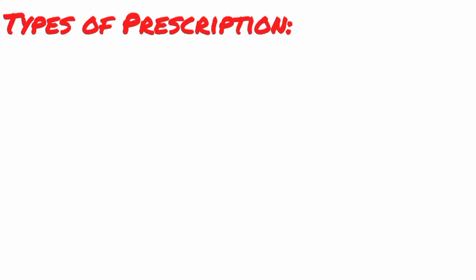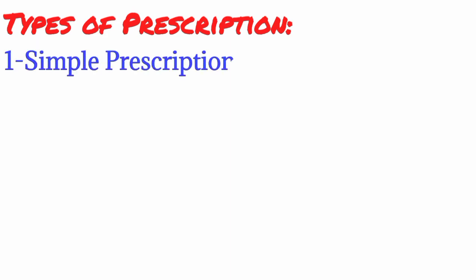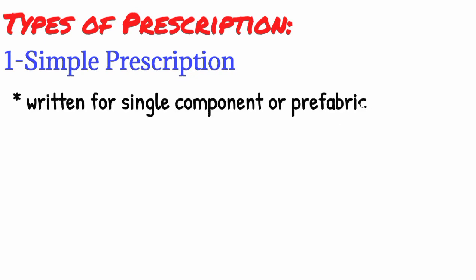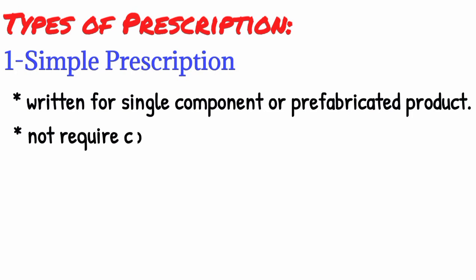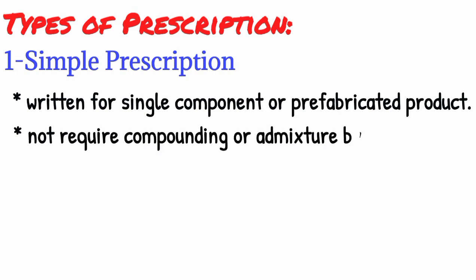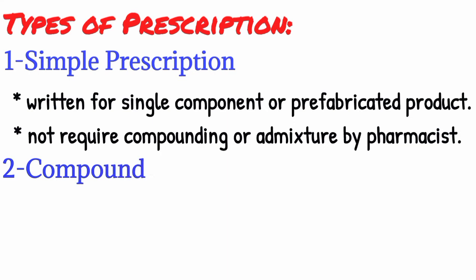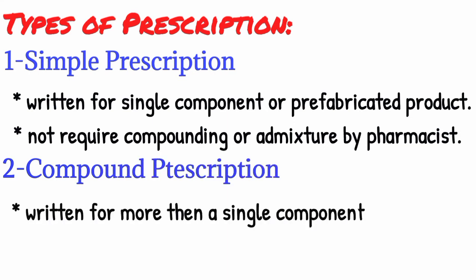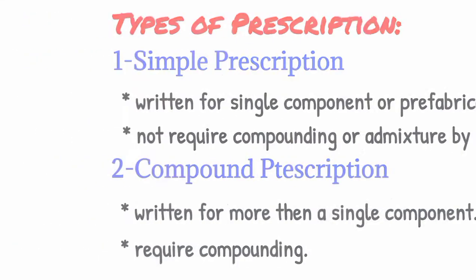The types of prescription are: number one, simple prescriptions — those written for a single component or prefabricated product that do not require compounding or admixture by the pharmacist. Number two, compound or complex prescriptions — written for more than a single component and requiring compounding. Number three, e-prescription or electronic prescription — the use of electronic means for the generation and transmission of prescriptions, used and accepted in some countries.